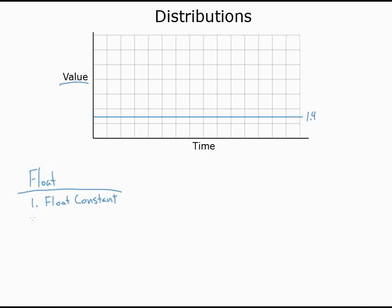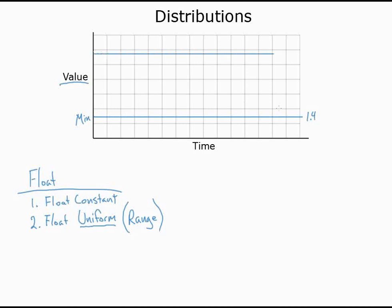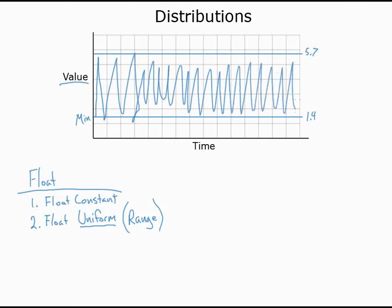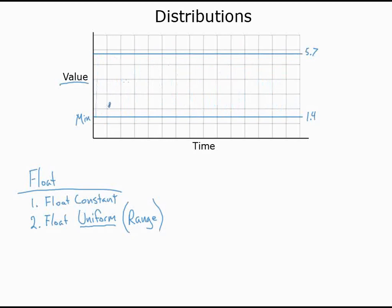That takes us to float uniform, which you'd use for something like lifetime where you can specify a minimum and maximum range. Whenever you hear 'uniform,' think 'range.' In a float uniform, we get a min value and a max value — let's say 1.4 and 5.7. The resulting number is randomly selected from within that range. The first particle born could get 2.8, the next could get 5.3. No particle will have a lifetime less than 1.4 or greater than 5.7 seconds — you're just grabbing a random number from within that range.